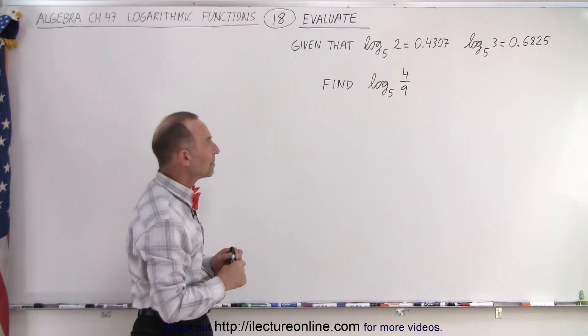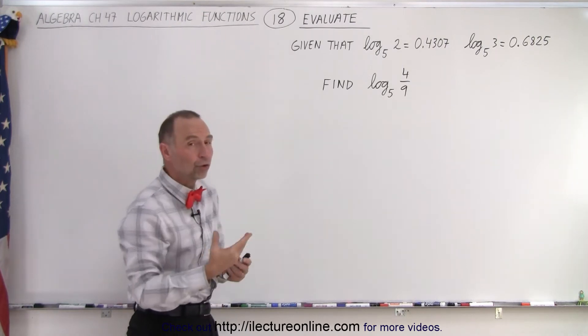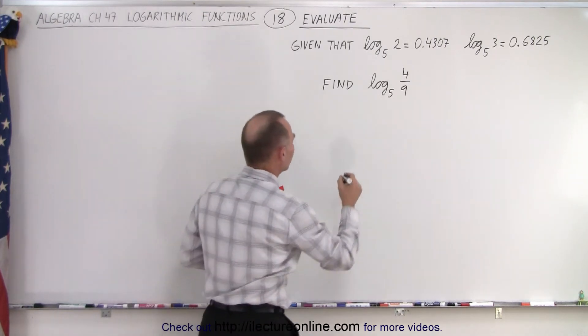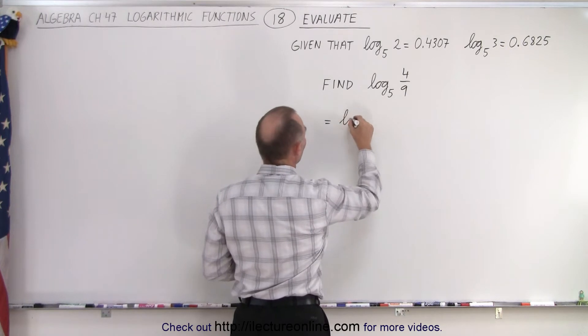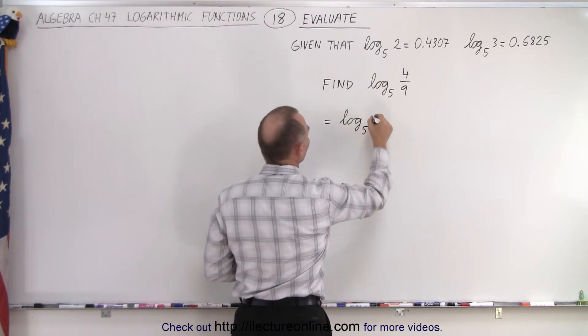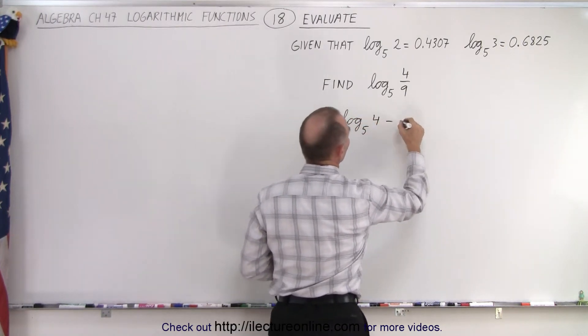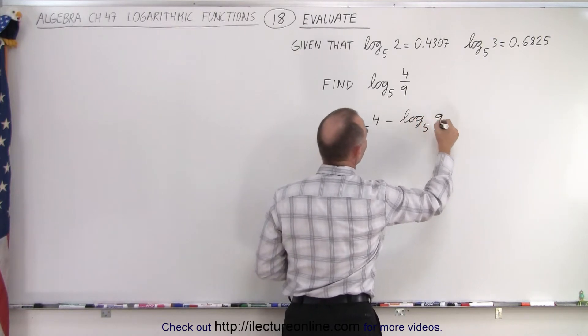So this is where the rules come in handy. First of all, we have a quotient, so let's use the quotient rule. So this can then be written as the log base 5 of 4 minus the log base 5 of 9.